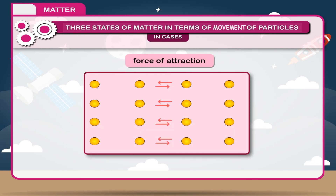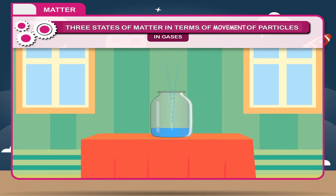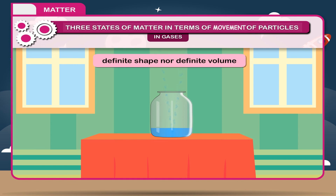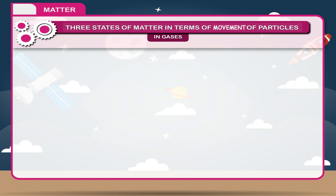In gases, the force of attraction between the gaseous molecules is least. Due to less intermolecular force, the molecules spread in the entire space of the container. Gases have neither definite shape nor definite volume, as the molecules spread in the entire space of the container.